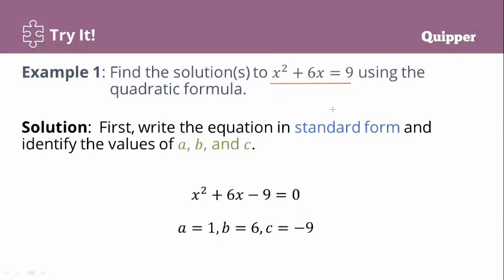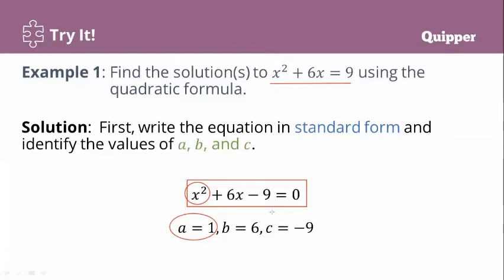We need to change this to standard form using the addition property of equality. We get x squared plus 6x minus 9 equals 0. Then we identify the values of a, b, and c. For the quadratic term x squared, a equals 1. For the linear term positive 6x, b equals positive 6. For the constant, c equals negative 9.